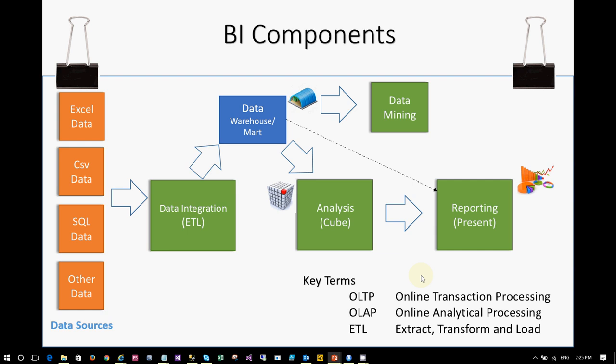ETL — Extract, Transform, and Load — is another key term in BI. Extracting means identifying multiple sources and getting them into one location. Transforming means stitching or converting different data types into a required format. Then loading the data into a data warehouse. Any BI system has these basic components: data sources, ETL, data warehouse, analysis via cubes, data mining, and reporting.